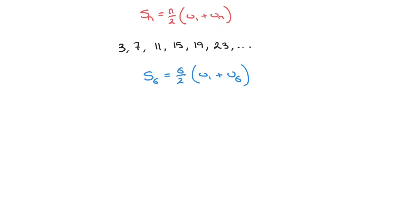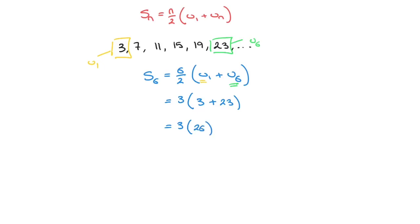We have u1, which is simply the first term of the sequence — that's 3. And we need u6, the sixth term, which is 23. So replacing those values in the formula: 6 over 2 is 3, times (u1 + u6) = 3 times (3 + 23) = 3 times 26. And finally, the sum of the first six terms equals 3 times 26, which is 78. If you're not convinced, go ahead and add those six terms together and you'll see it equals 78.